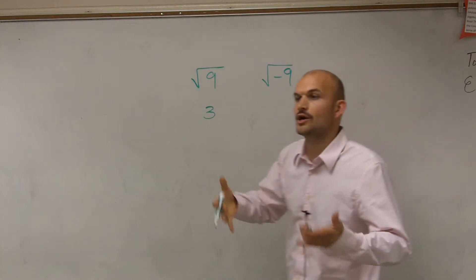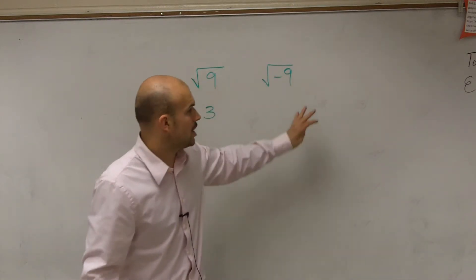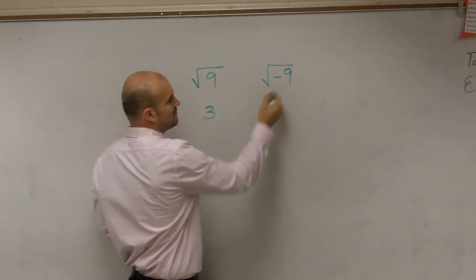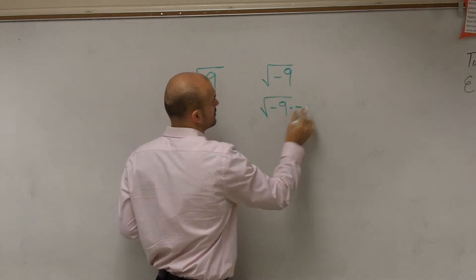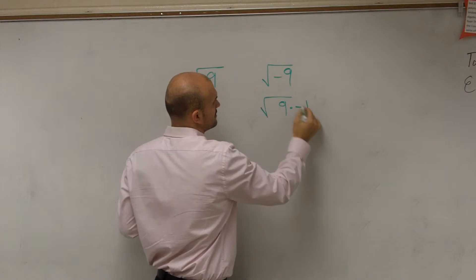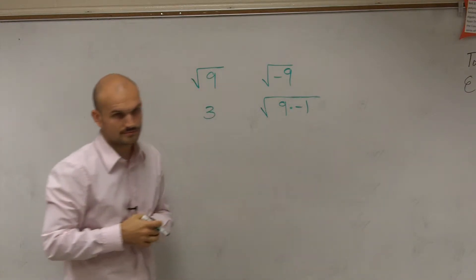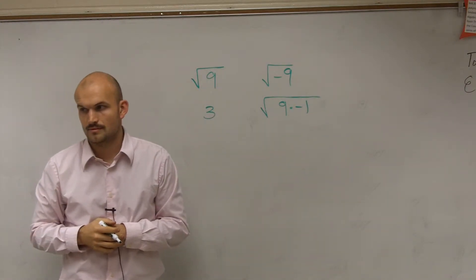So what we do is we created our imaginary number system to help us solve this. So therefore, I can rewrite this as, I'm sorry, positive 9 times negative 1.